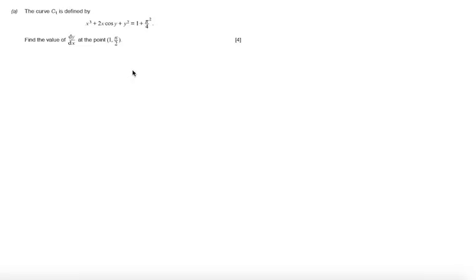Okay, so this question is all about implicit differentiation. What we're going to do is differentiate each term in this equation implicitly. It's worth noticing before we start that this term here is a product of a function of x and y, so we're going to need to use the product rule to differentiate it.